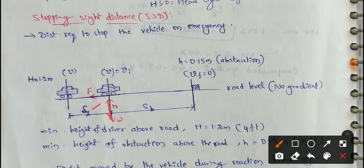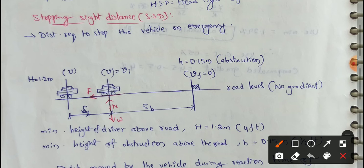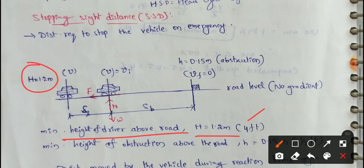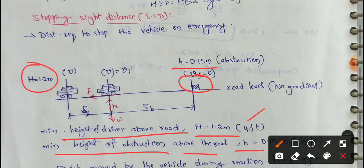The vehicle is moving and the braking force acts in the opposite direction. Friction acts opposite to the direction of motion. H (driver eye height) is equal to 1.2 m, which is nearly 4 feet — the minimum height of the driver's eye above the road. The minimum height of the obstruction above the road is h = 0.15 m, which is nearly half a foot.